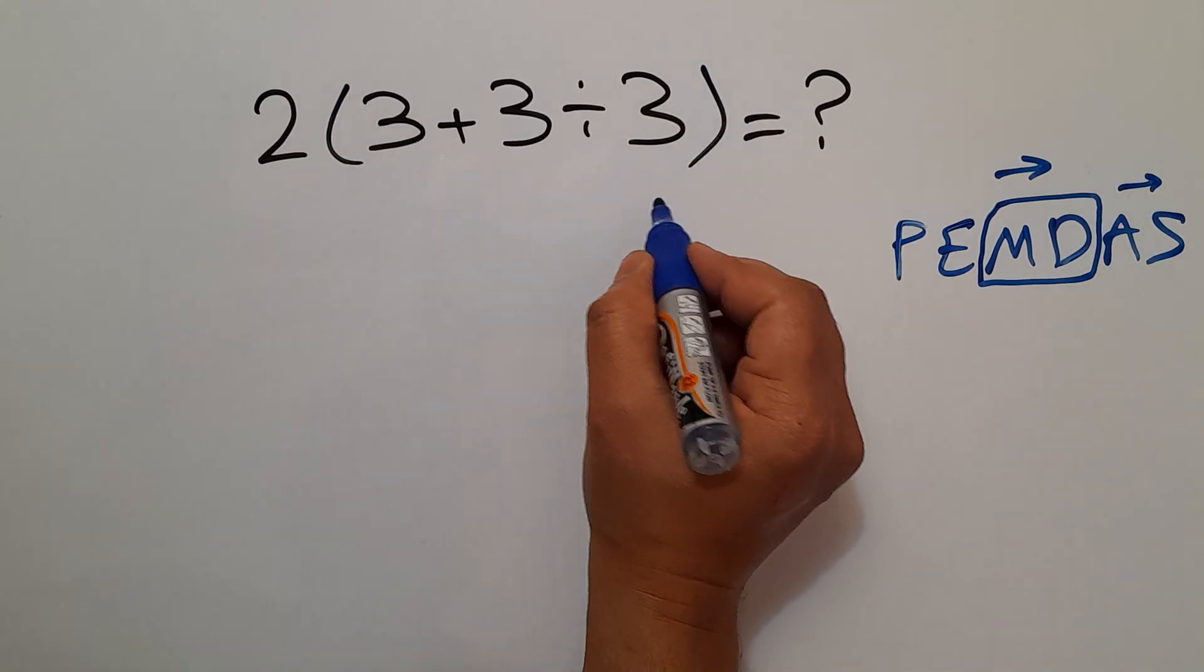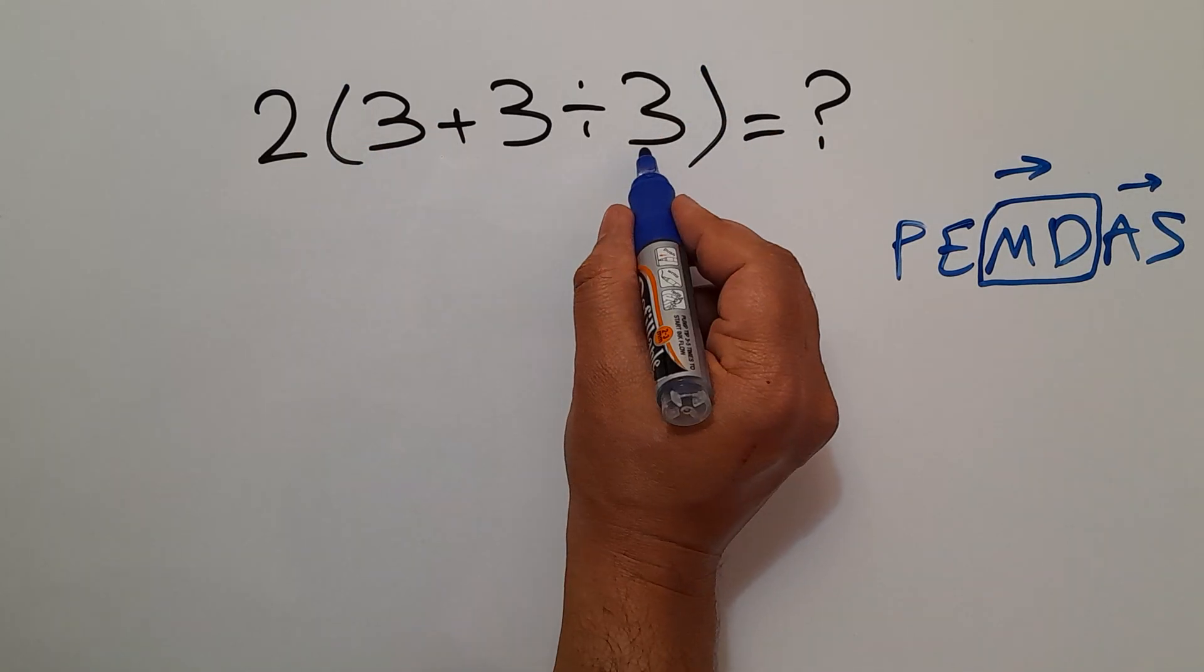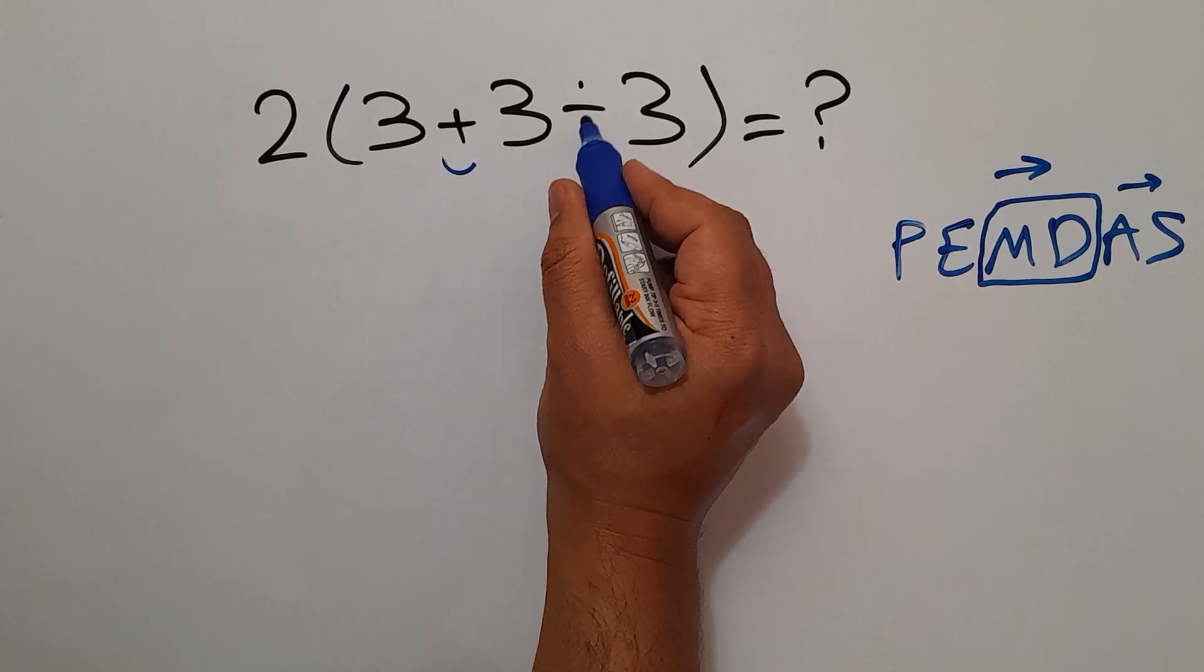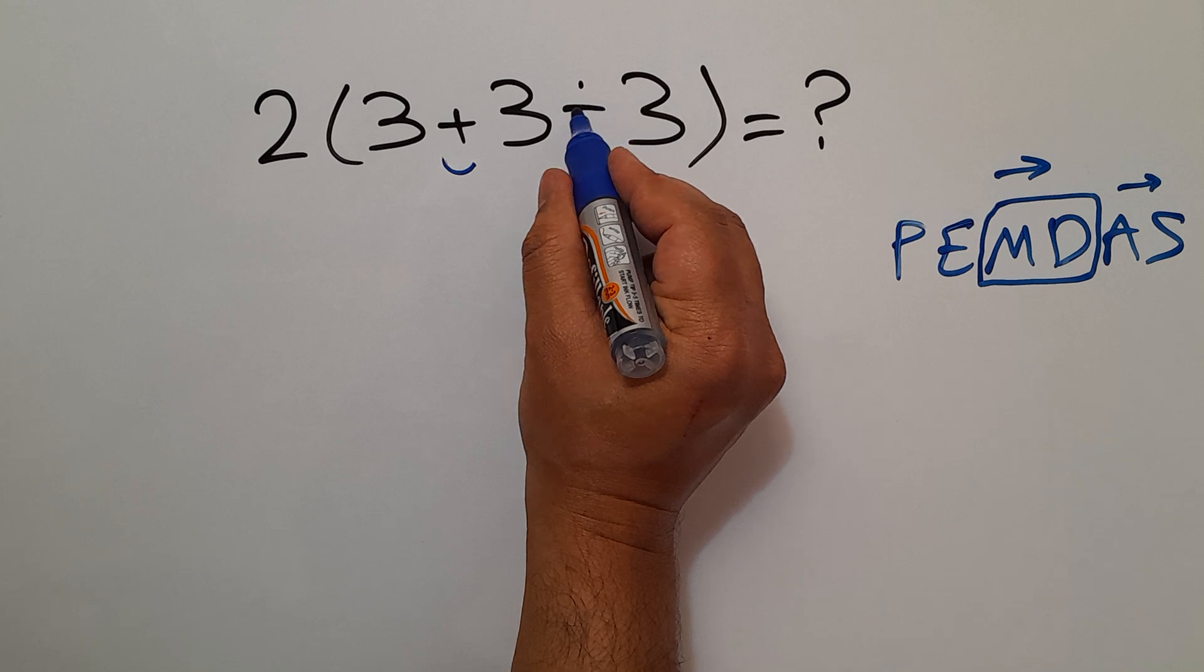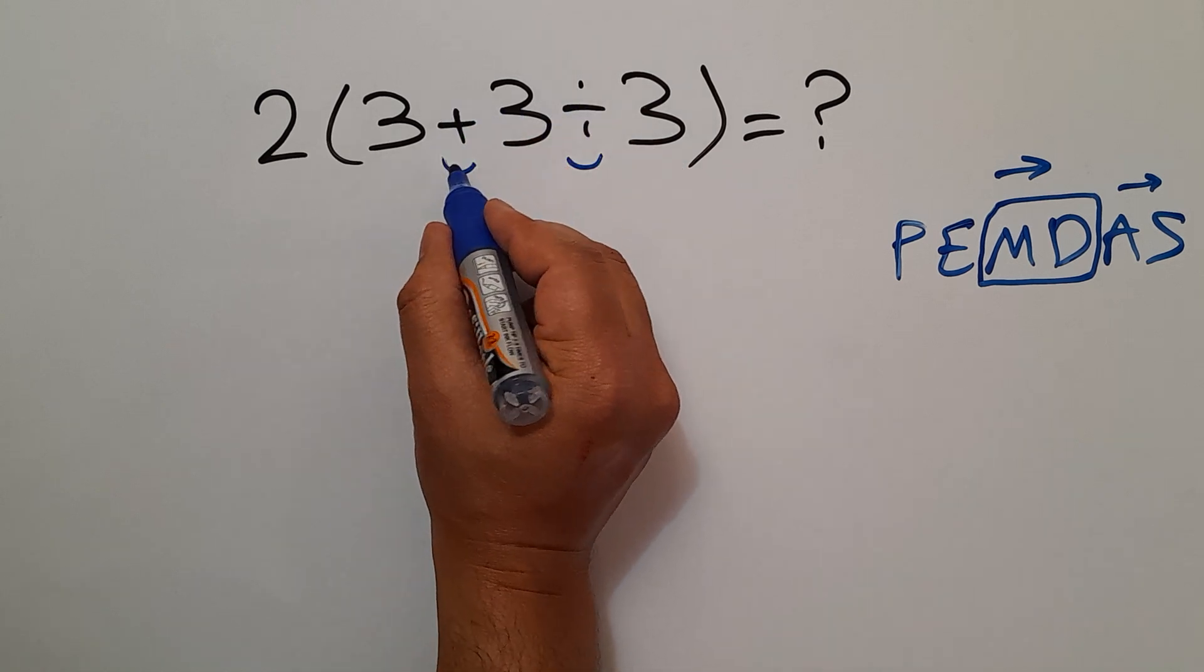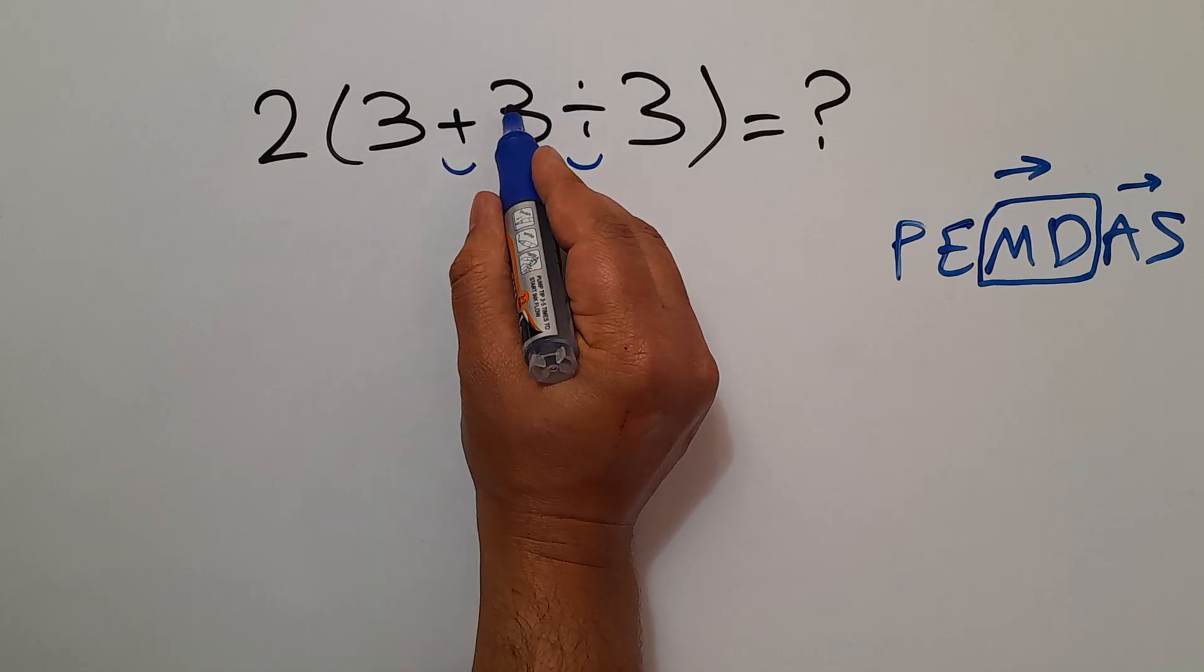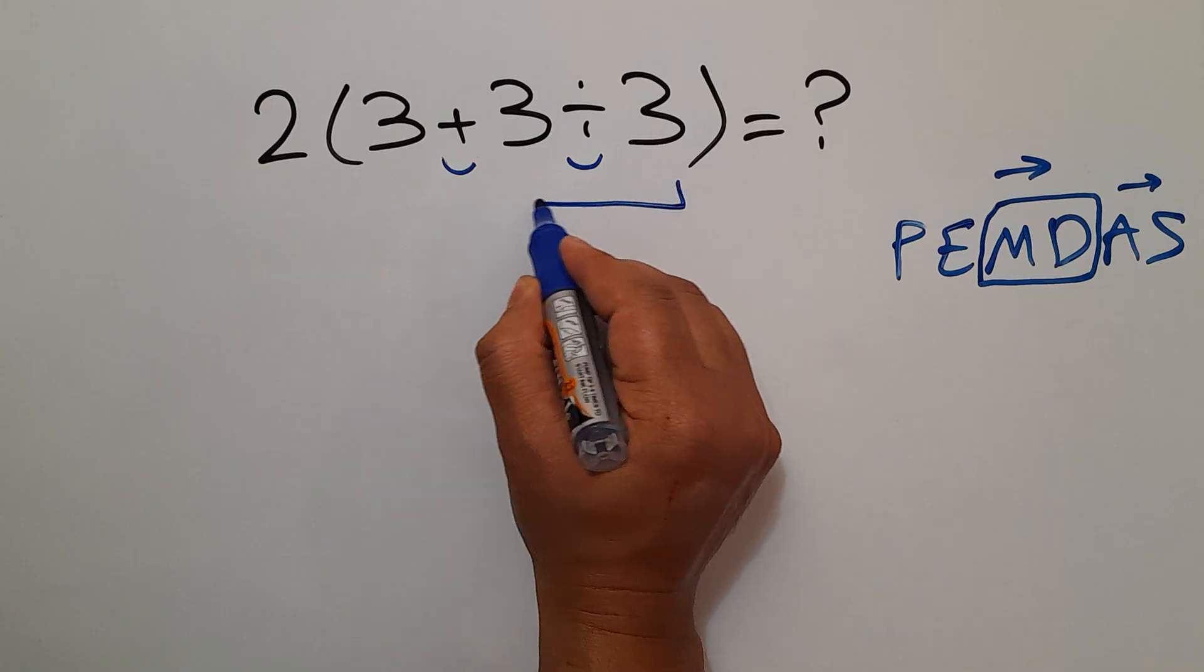Here, we have these parentheses, and inside these parentheses, we have this addition and this division. Division and division have higher priority than addition. So, first, we calculate 3 divided by 3, which equals 1.